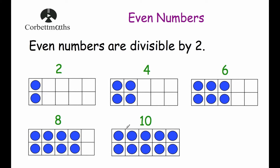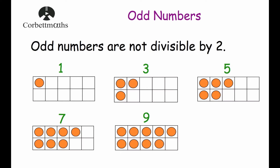So these are all divisible by 2. Whereas odd numbers are not divisible by 2. So 1, 3, 5, 7 and 9 — they're not divisible by 2.